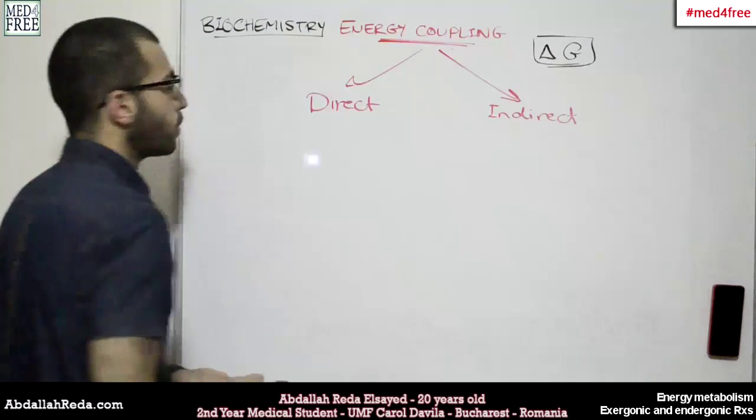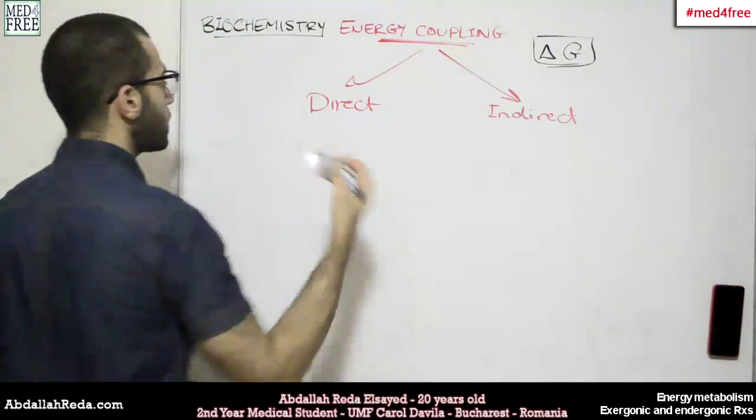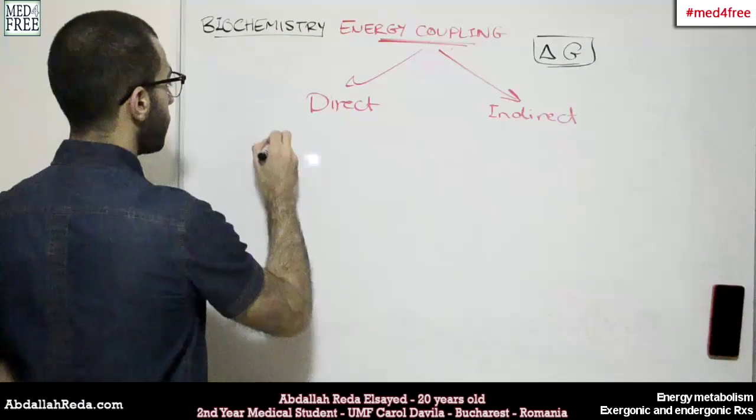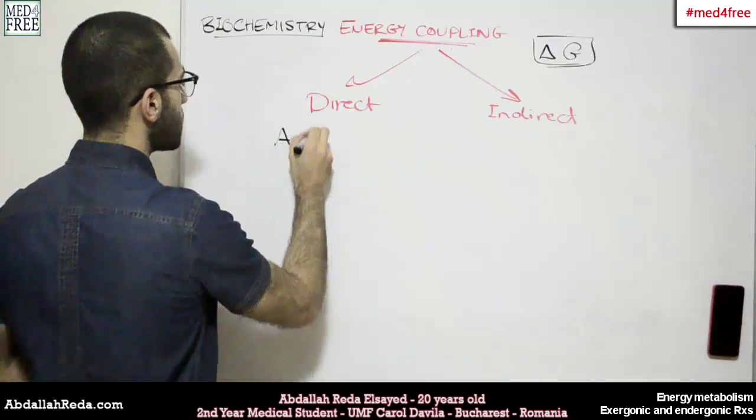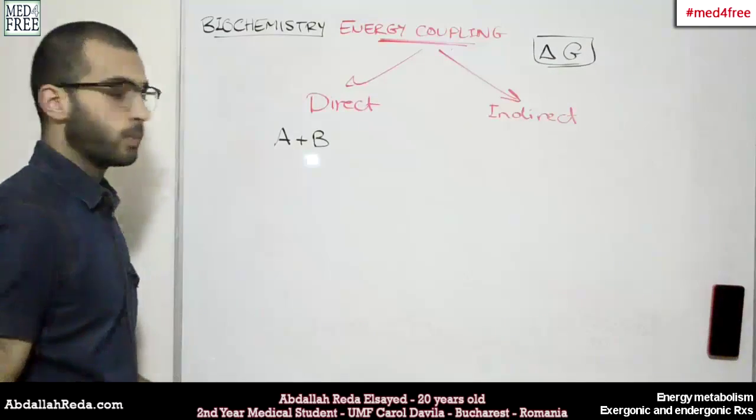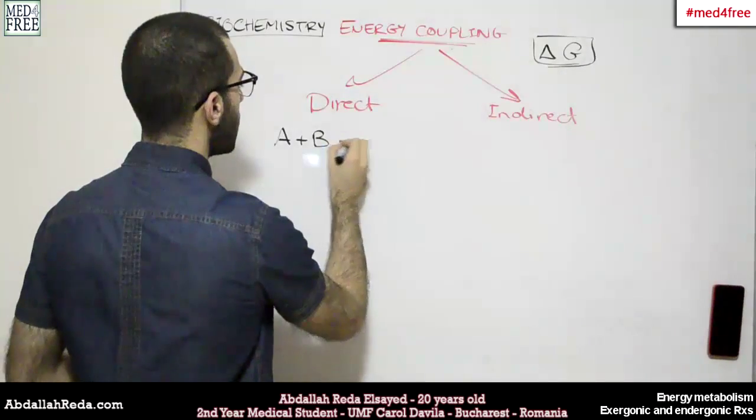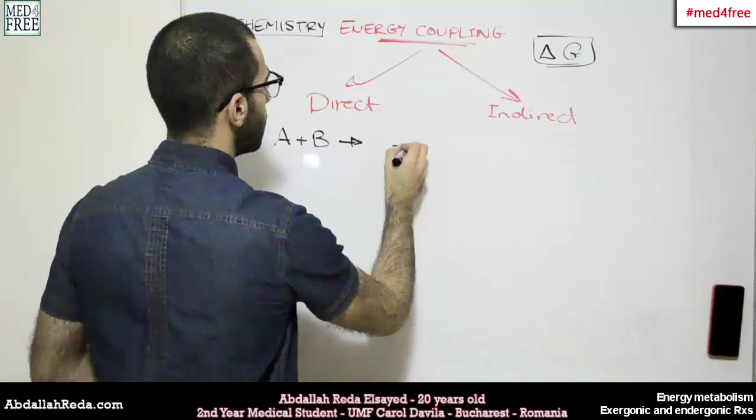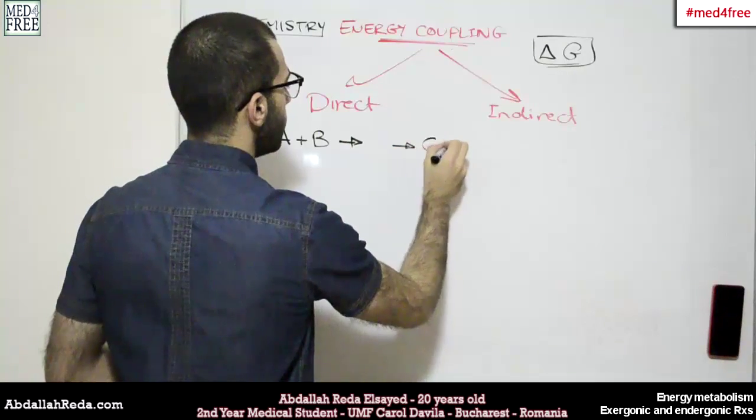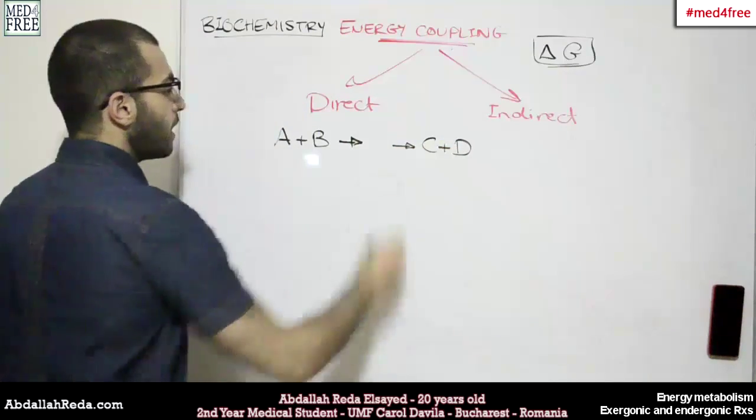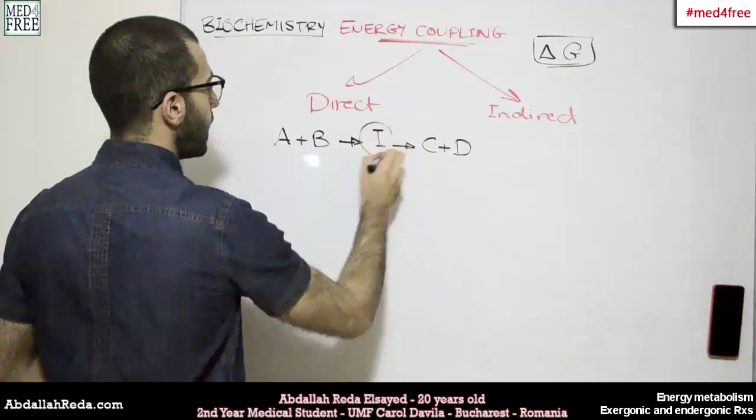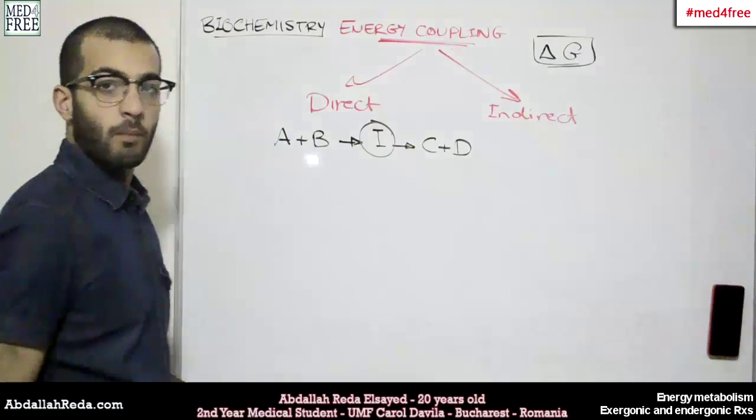The first one will go on like this. Let's say for the inputs we have compounds A plus B, and for the output we have C plus D. And here in the middle we have an intermediary compound.